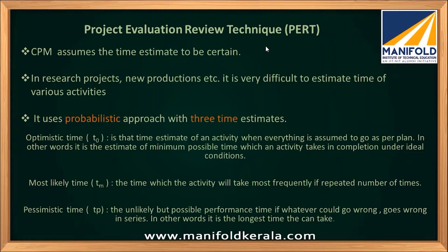Optimistic time is when everything is going according to plan under ideal situations — nothing goes wrong, so what is the minimum time? Most likely time means things are not ideal; some deviations or delays can happen, and based on experience with similar activities, this is the time that will most likely occur. Pessimistic time is when everything is going wrong — it will take maximum time to complete.